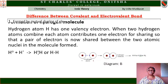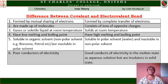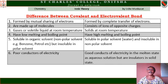Let us look at the difference between covalent and electrovalent bonds. Covalent compounds are formed by mutual sharing of electrons. Electrovalent compounds are formed by complete transfer of electrons. Covalent compounds are made up of molecules. Electrovalent compounds consist of ions of opposite charges. Covalent compounds are gases or volatile liquids at room temperature. Electrovalent compounds are solid at room temperature. Covalent compounds have low melting and boiling points. Electrovalent compounds have high melting and boiling points.